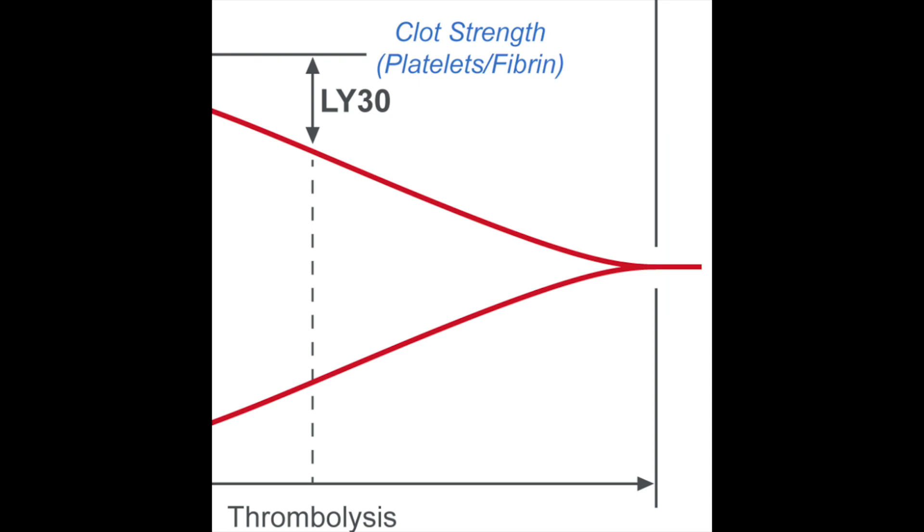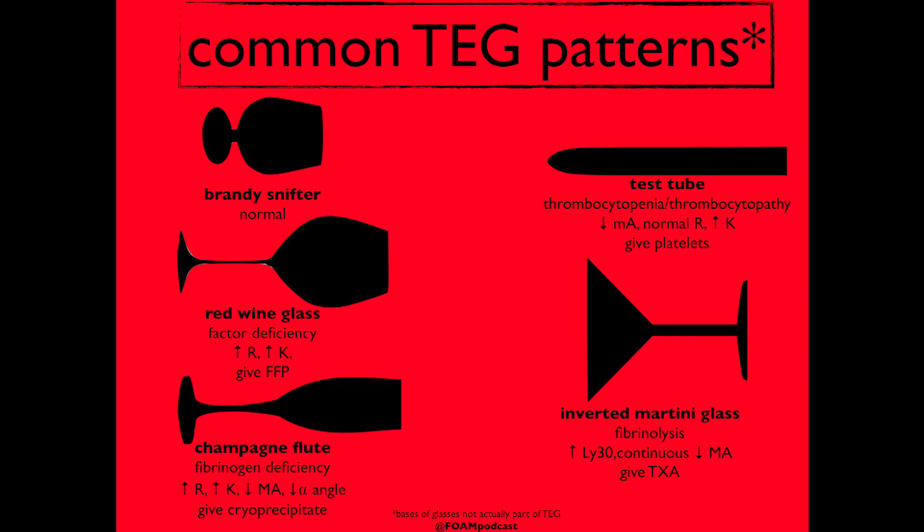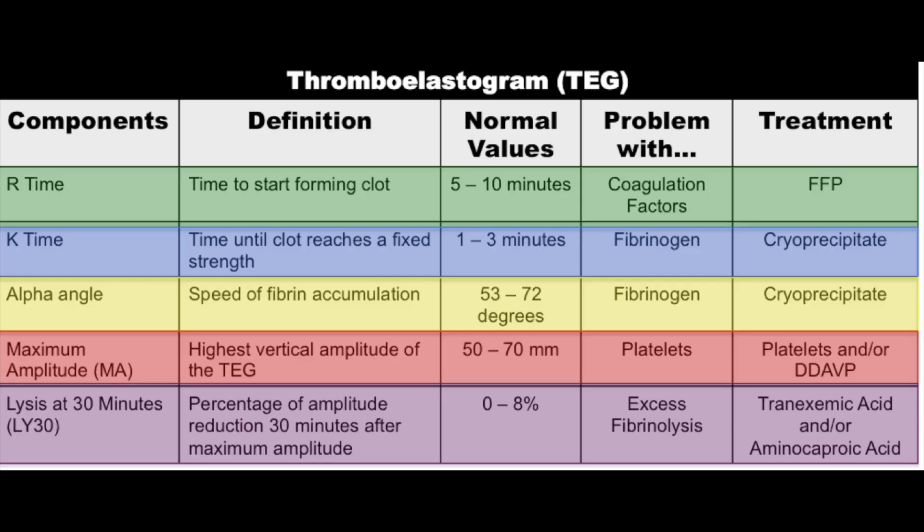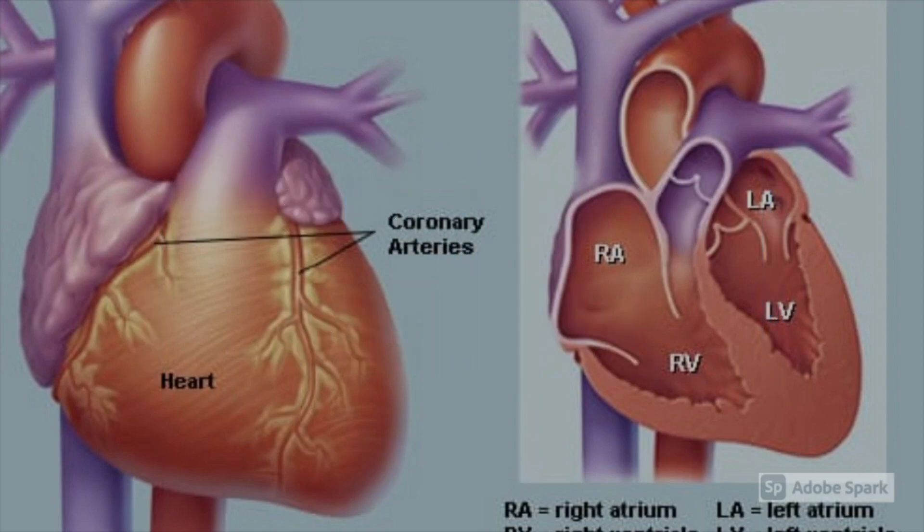The fifth one is LY30. LY30 is lysis after 30 minutes after MA. It's an amplitude reduction after 30 minutes after MA. It measures fibrinolysis. If it's high, it should be treated with tranexamic acid.